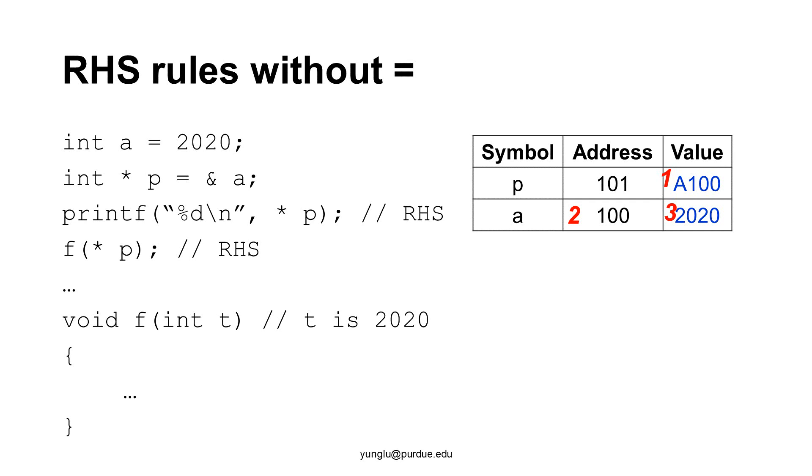This printf statement will print the value 2020. The next function call is another example. Function f takes one argument and it is an integer. When calling the function, asterisk p is given. This also uses the right-hand side rule and reads the value of ie. Hence, the value of t in the function f is 2020.